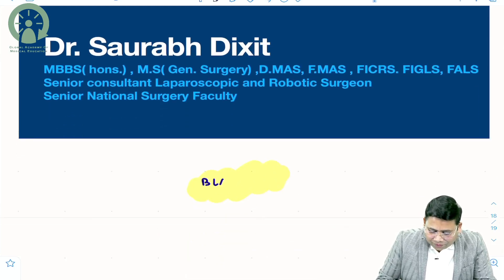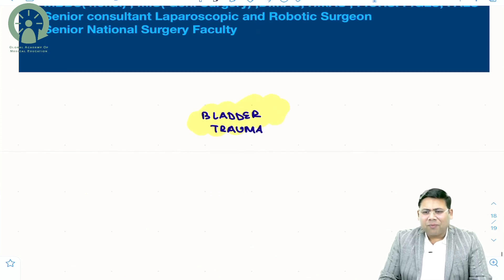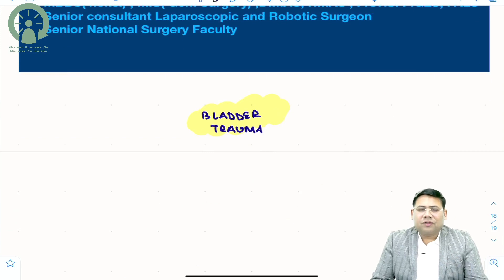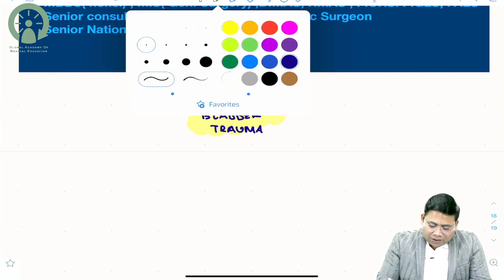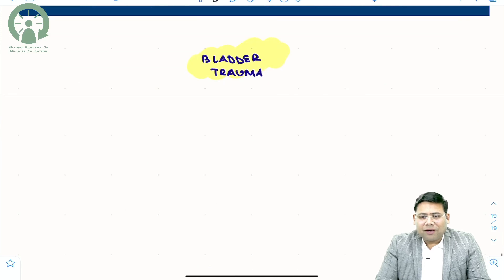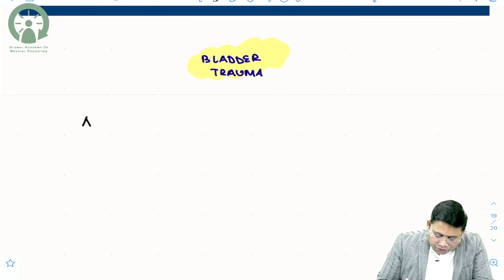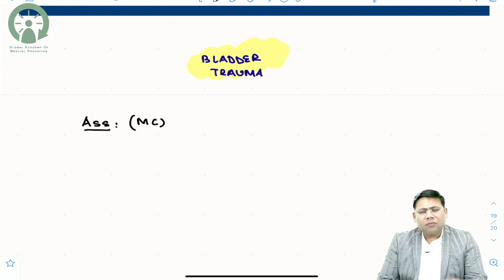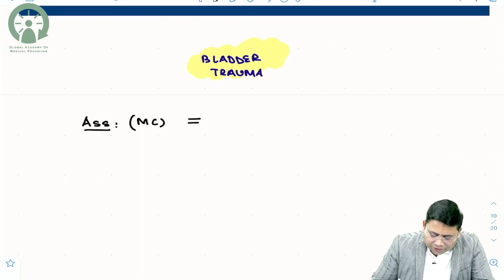The first thing we are going to study today is bladder trauma. Bladder trauma is a very common condition that we see, and this is because of frequent RTAs — road traffic accidents. There are a few important things you need to understand about bladder trauma. When we talk about association, the most common cause is fracture pelvis.